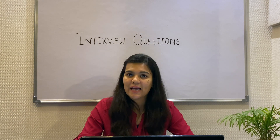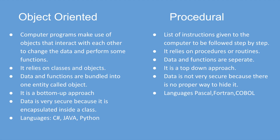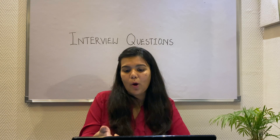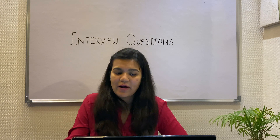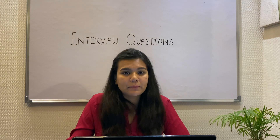Please note that both of these are ways of programming and not languages, as most of us get confused. Now let's discuss the differences. In object-oriented programming, computer programs make use of objects that interact with each other to change the data and perform functions. In procedural programming, it is a list of instructions given to the computer for what task to perform.